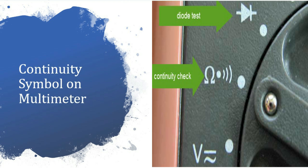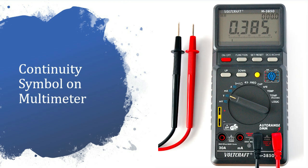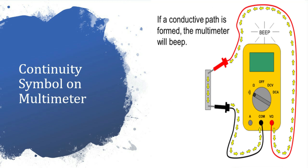Continuity is a setting used to check if two things are electrically connected. The multimeter will beep if there is a conductive path between the two probes, and will not make any noise if there is no conductive path. Note that sometimes the continuity check can be combined with other functions on a single setting.